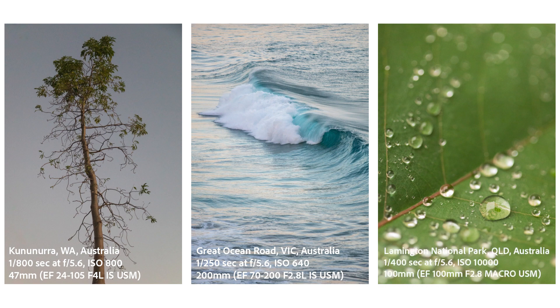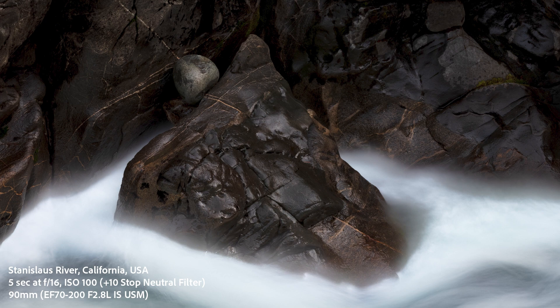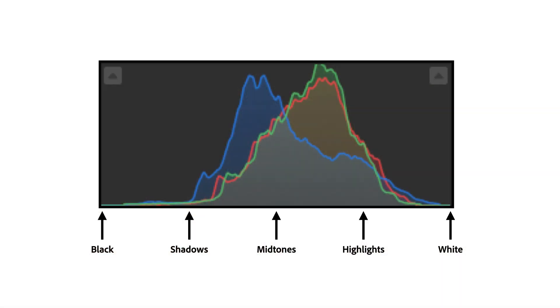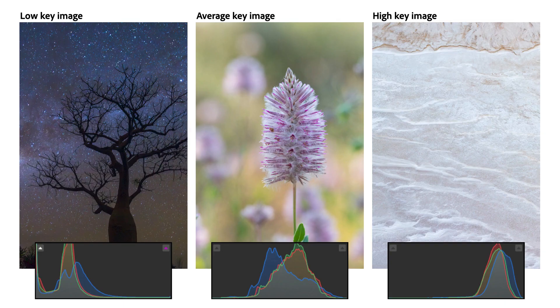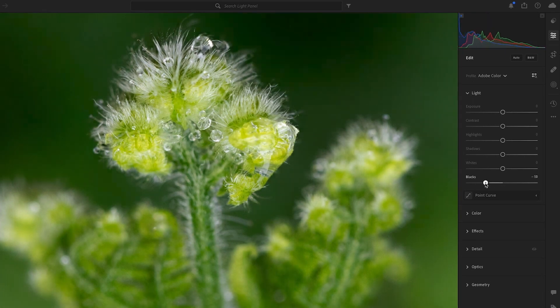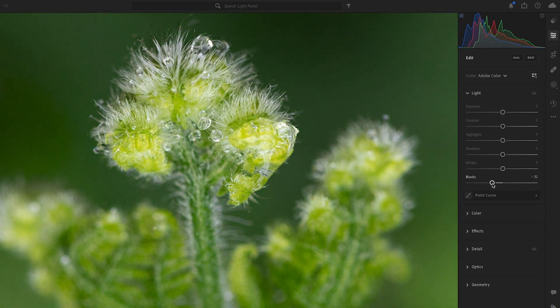Fortunately, in most scenarios we can expose for the highlights, and while the shadows may be too dark in the original capture, we can use Lightroom to lighten them. When editing photos, we can use the histogram as a reference. The histogram is a visual representation of the dynamic range of your image, plotted from black on the left to white on the right. The height of the column shows how many pixels in the image have that value.